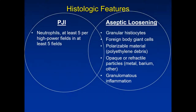In terms of histologic features, there are findings associated with aseptic loosening and wear debris on one side, and neutrophilic infiltrates indicating periprosthetic joint infection on the other. In general, the more aseptic loosening features you see, the less likely infection is, and vice versa. However, these two categories overlap — don't dismiss a case that looks mostly like aseptic loosening just because you see sheets of granular histiocytes, as infection can still be present.